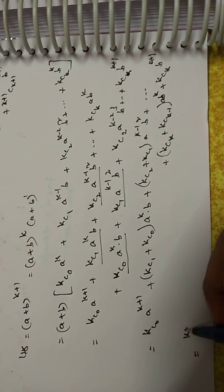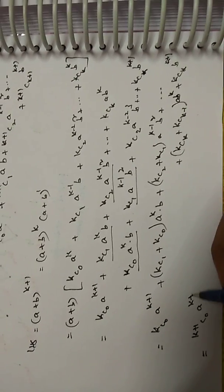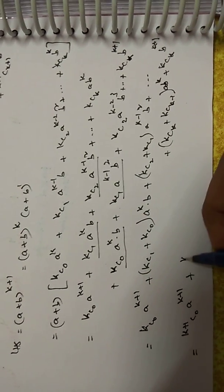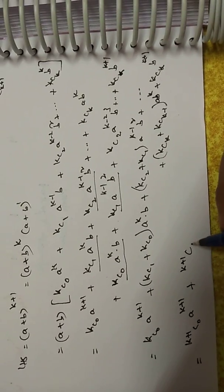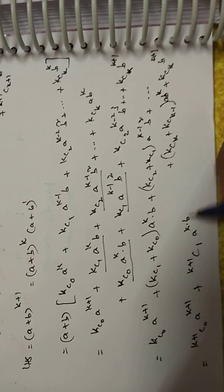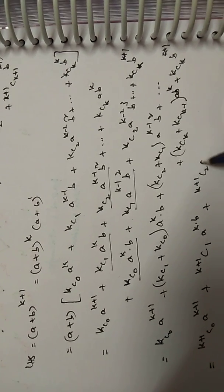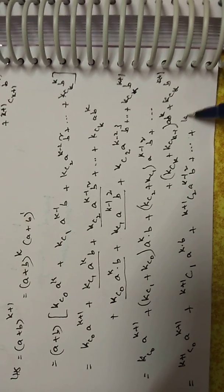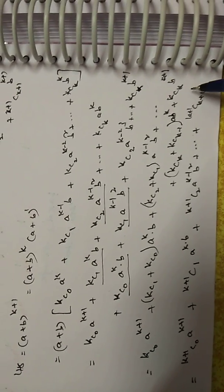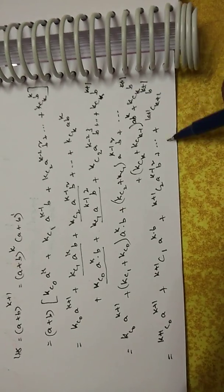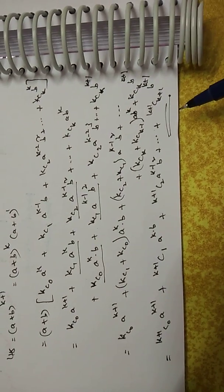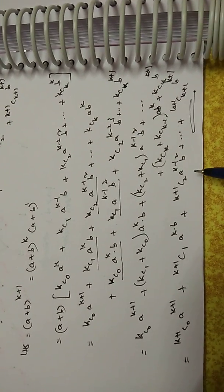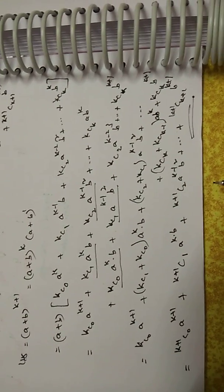Now kC0 = (k+1)C0. Using the formula nCr + nC(n-r) gives (n+1)Cr: (k+1)C1 * a^k * b + (k+1)C2 * a^(k-1) * b^2 + ... and kCk = (k+1)C(k+1), giving b^(k+1). Hence P(k+1) is proved. By mathematical induction, P(n) is true for every n belonging to N.